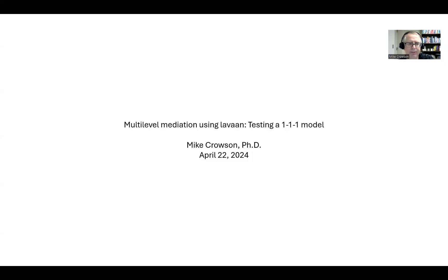Hi everyone. In this video, I'll be giving a demonstration of multi-level mediation analysis using lavaan. We're going to be testing a 1-1-1 mediation model. In my previous video, I demonstrated how to carry out a multi-level path analysis where we had a mediation model specified at level two and a path model at level one with two exogenous and two endogenous variables. In this video, we're specifying all of the main model at level one, so we won't have a prediction model at level two.